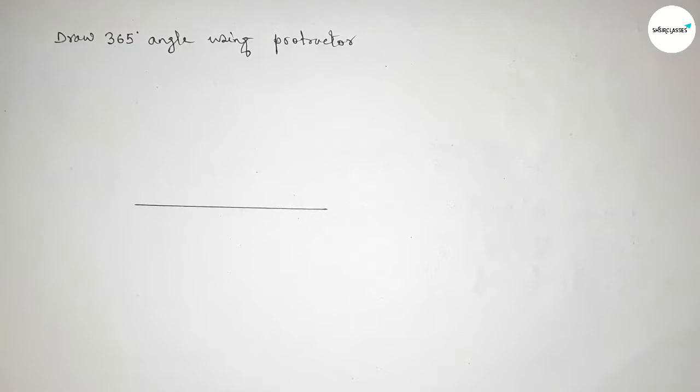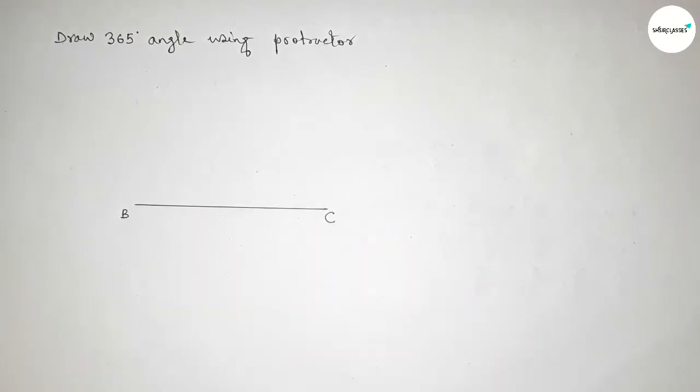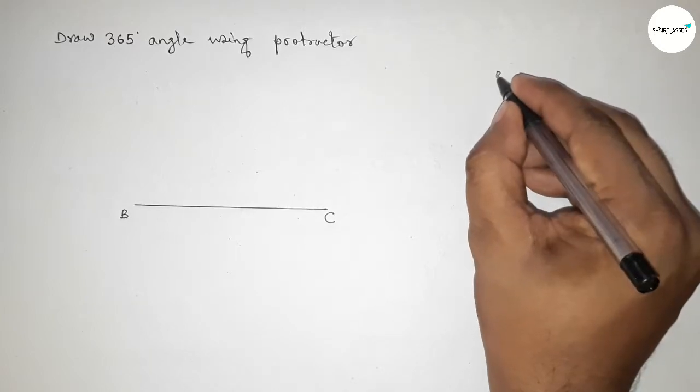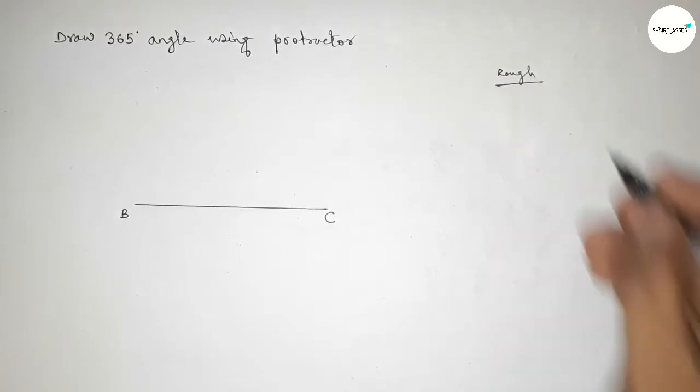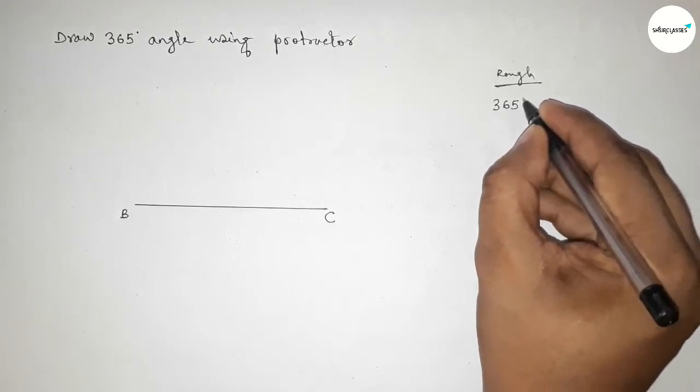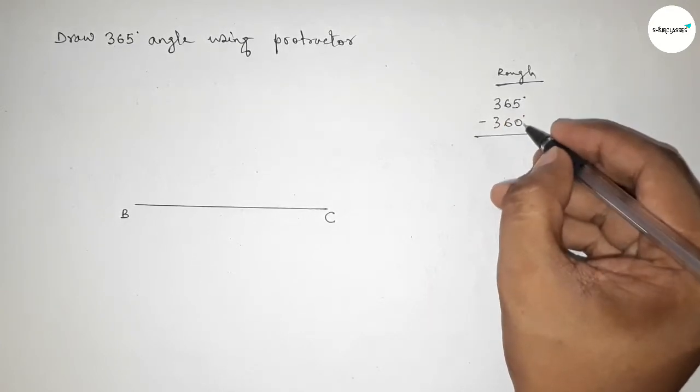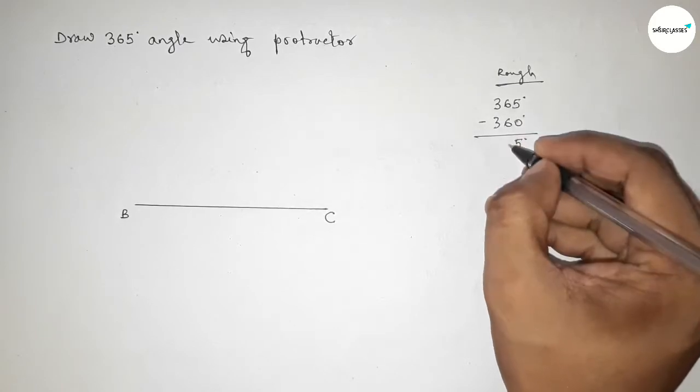Taking here point B and here C. Now roughly discussing here some calculation. So if we subtract 365 degree from 360 degree then we can get 5 degree. So now subtracting, this is 5 degree and here 0 and here 0.